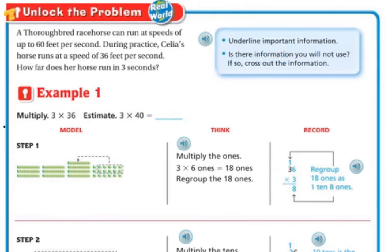First, let's underline the important information. We need to know that the horse runs at a speed of 36 feet per second, and we need to know how, because ultimately we're trying to find out how far her horse runs in three seconds.